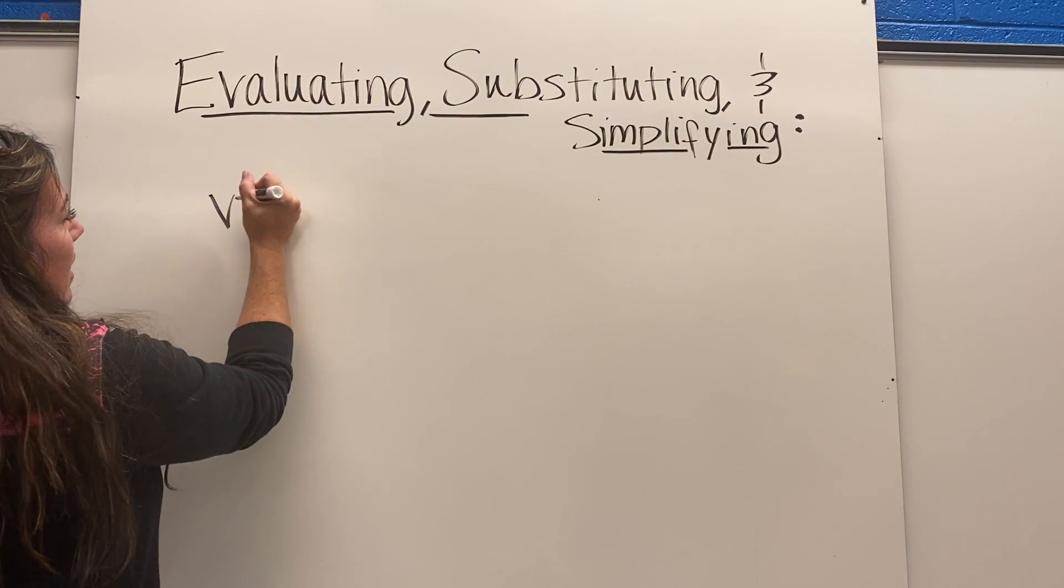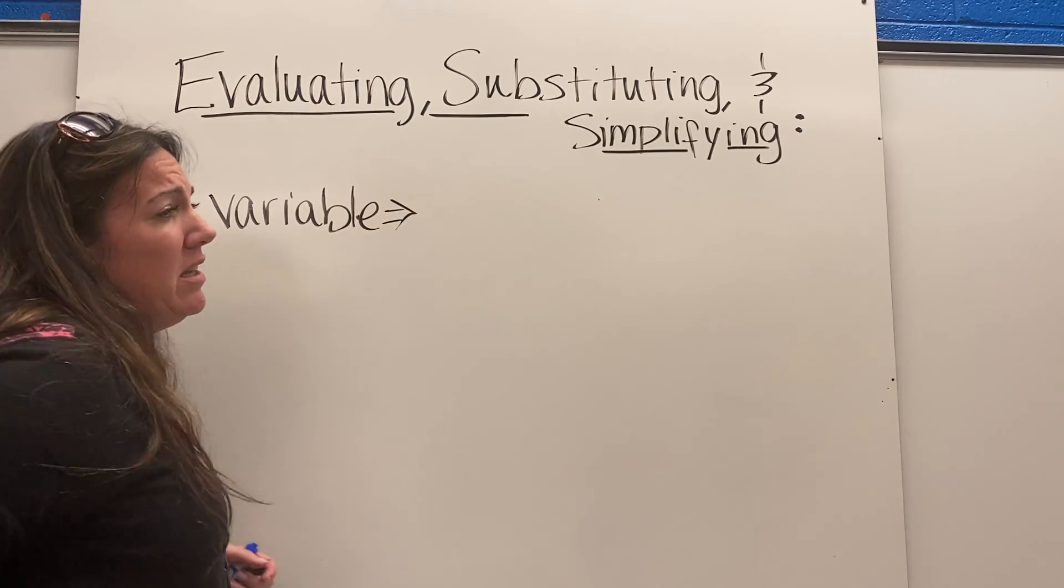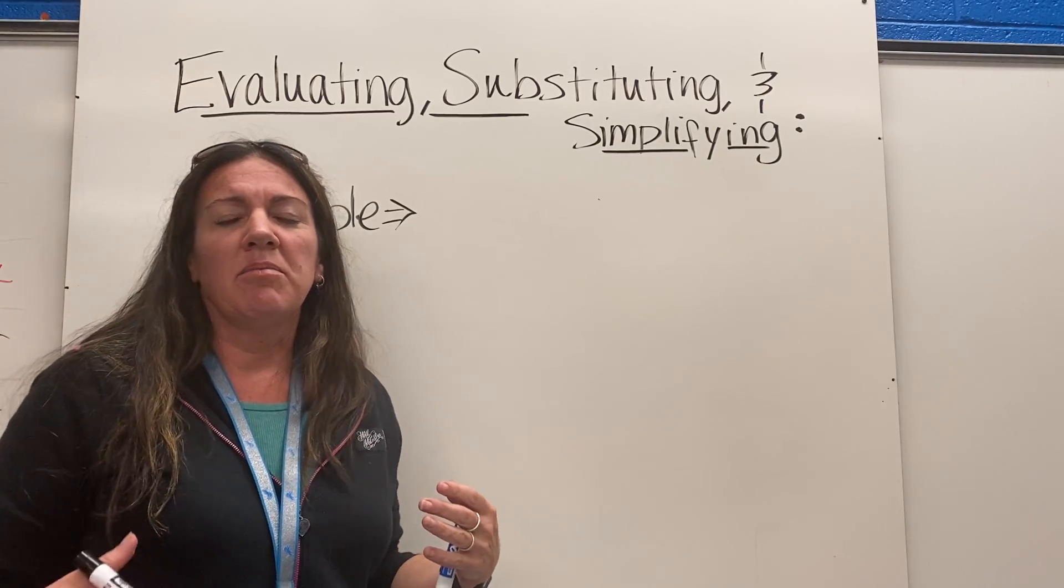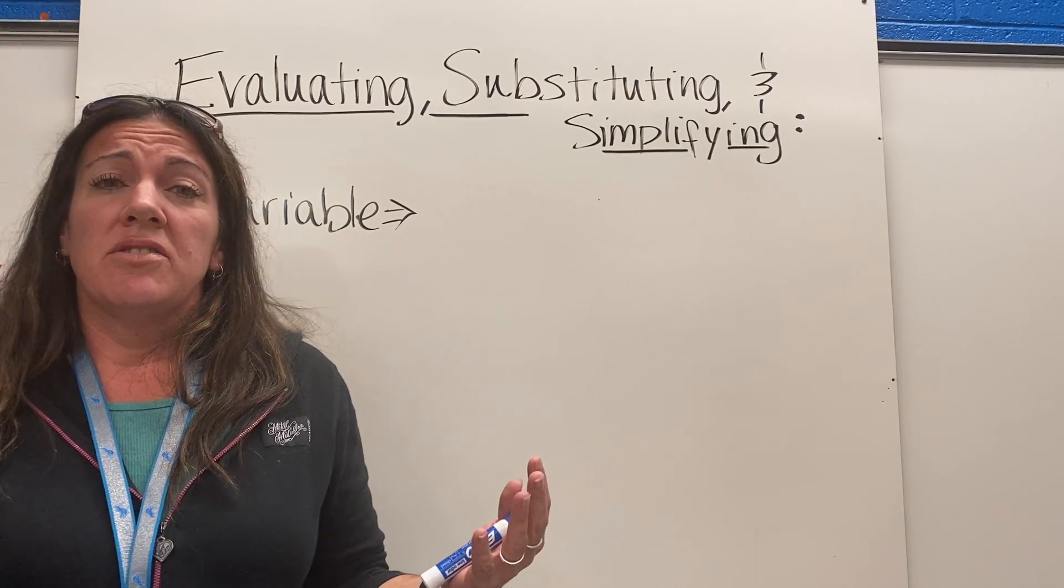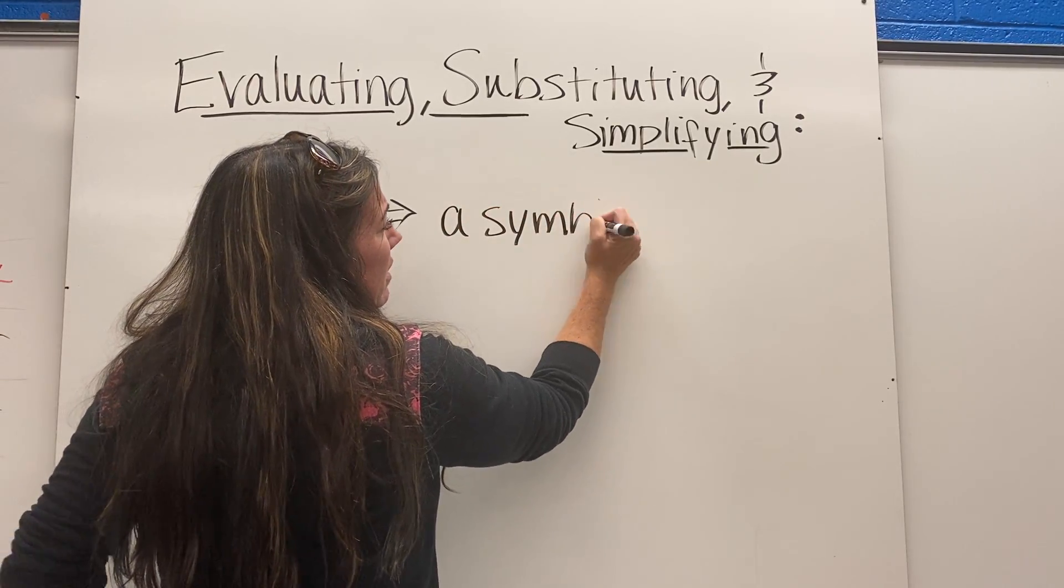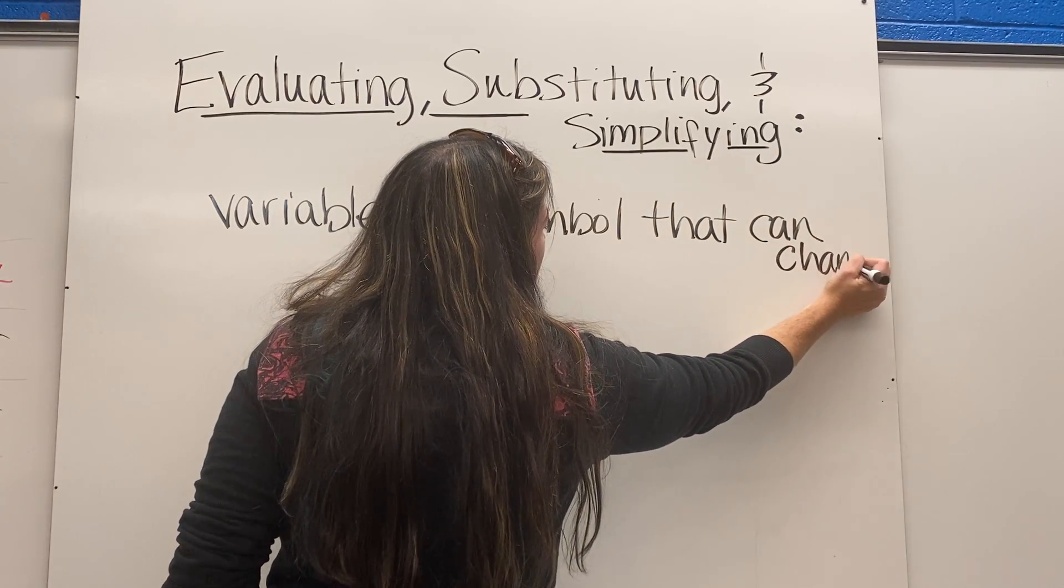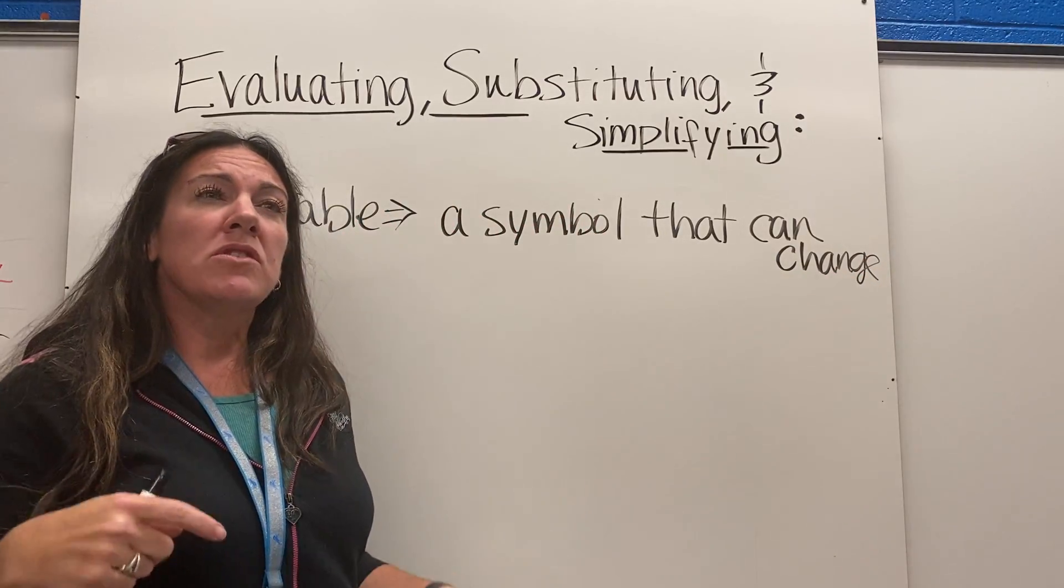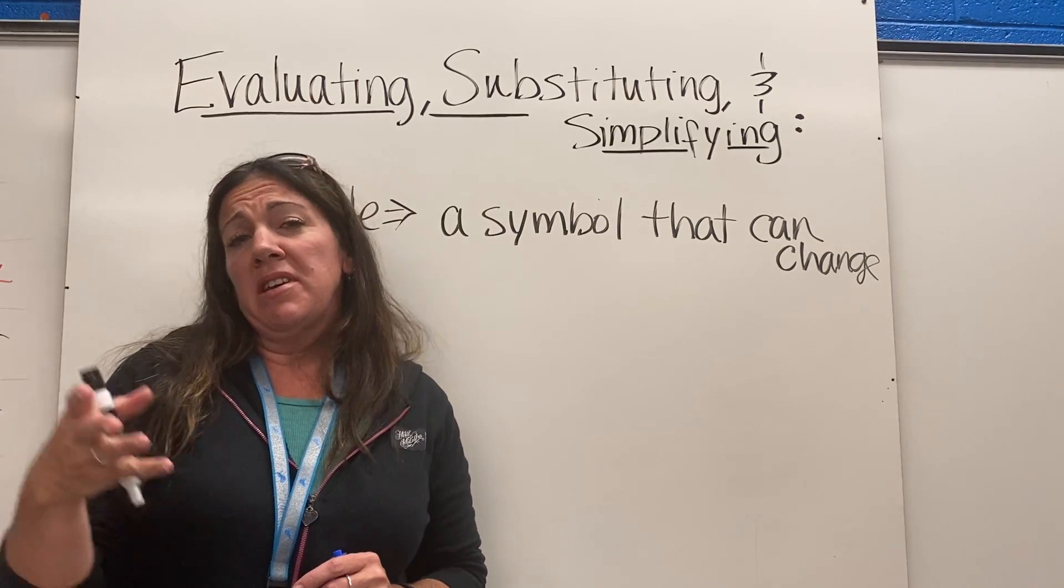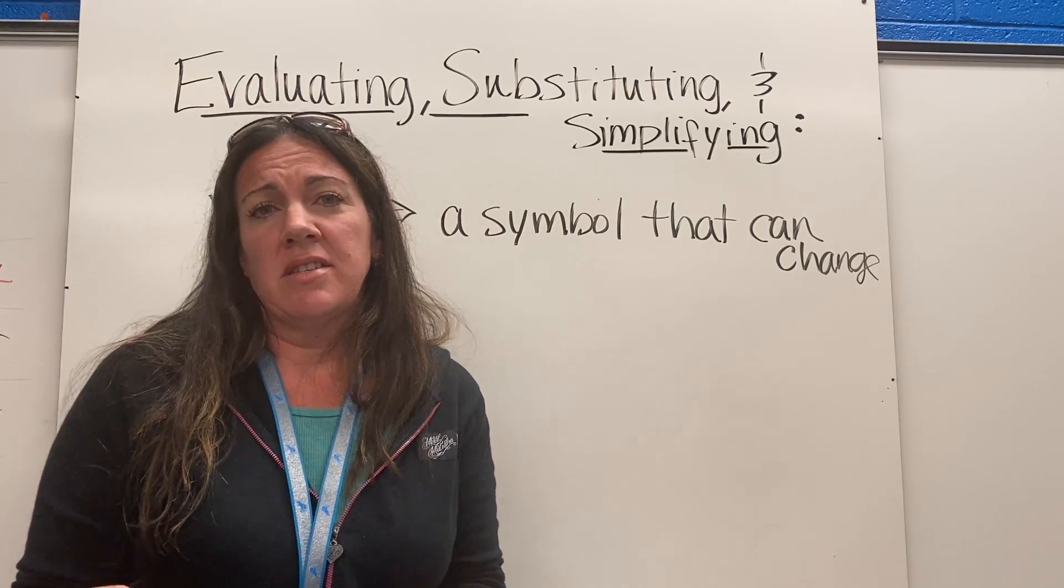The first one we have is a variable. A variable in math - a lot of people think of it as a letter, but really it's referred to as a symbol that can change. To vary is to change, and a variable is a symbol that can change. If you think about solving different equations and you solve for x, sometimes you might get x is 2, other times you might get x is negative 4. The number for x isn't always the same, it varies.